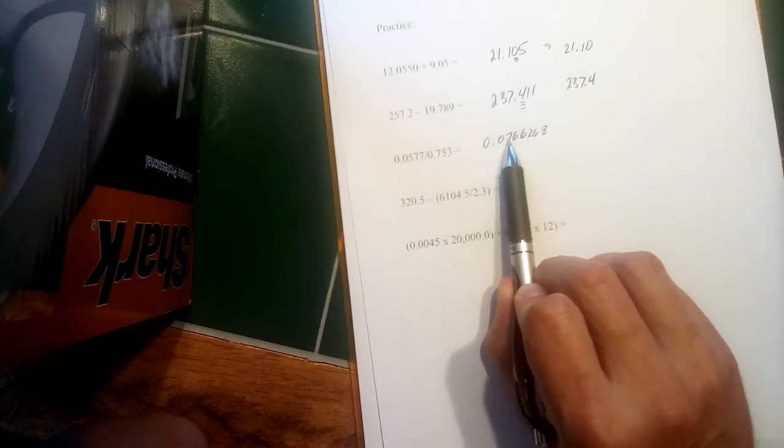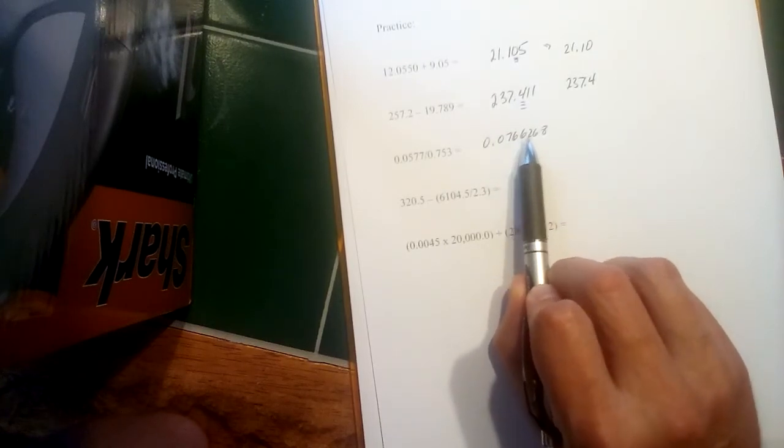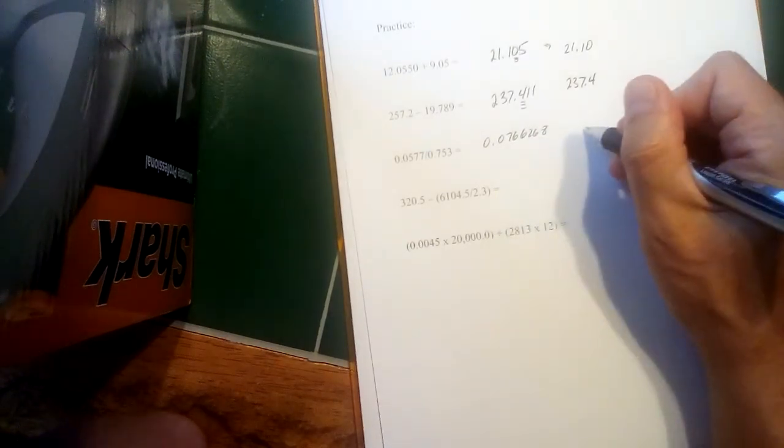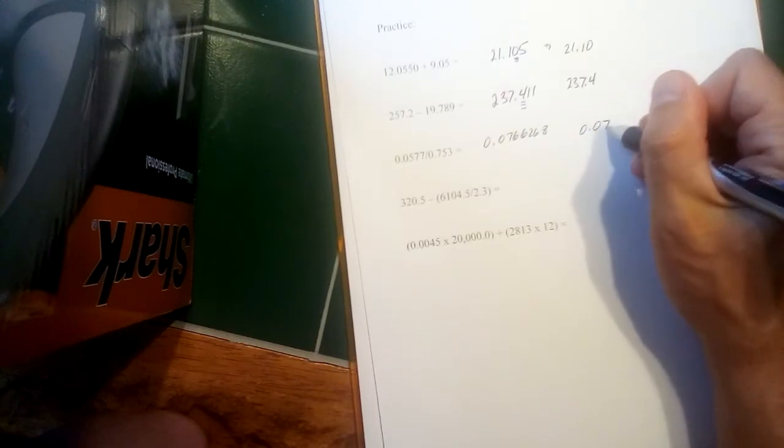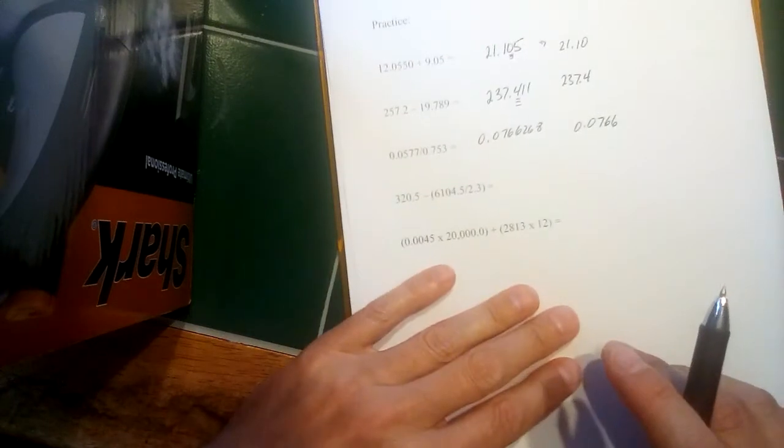Zero there, that doesn't count as a significant figure. Zero there does not count as a significant figure. The first significant digit we hit is here, the seven. So I can keep that seven. I can keep this six. And I can keep this six. That would mean I drop everything further. And since that's a two, I don't have to round up. So 0.0766 is what we should report for the answer here.